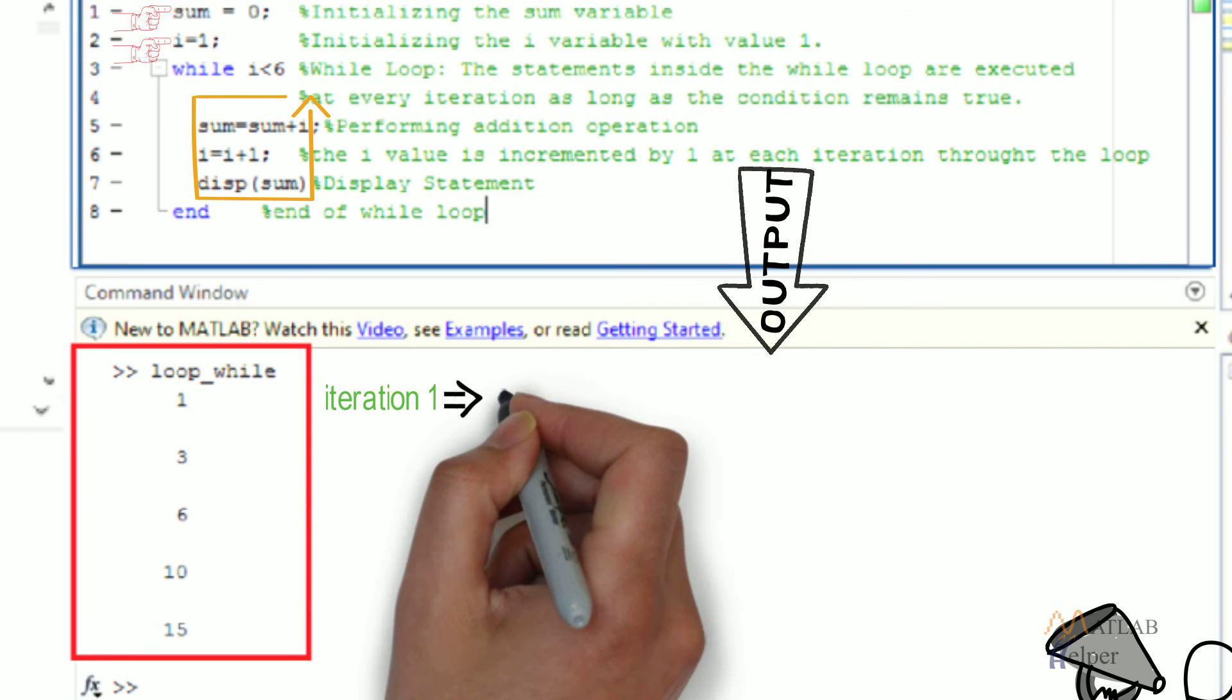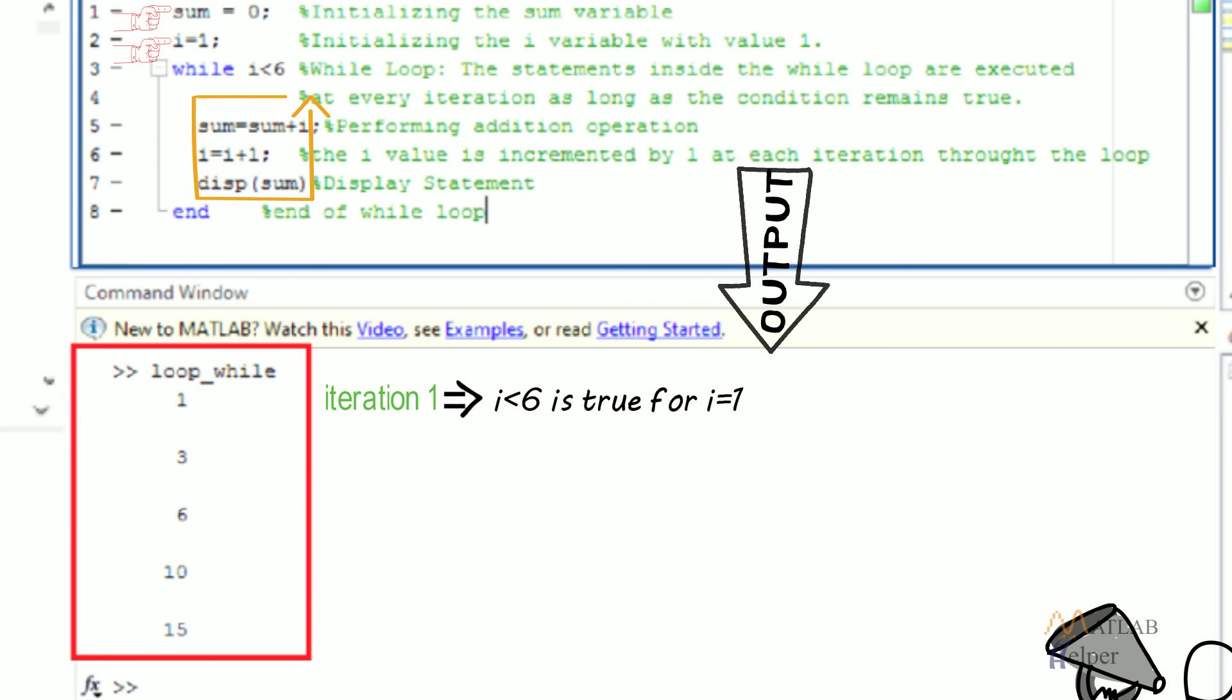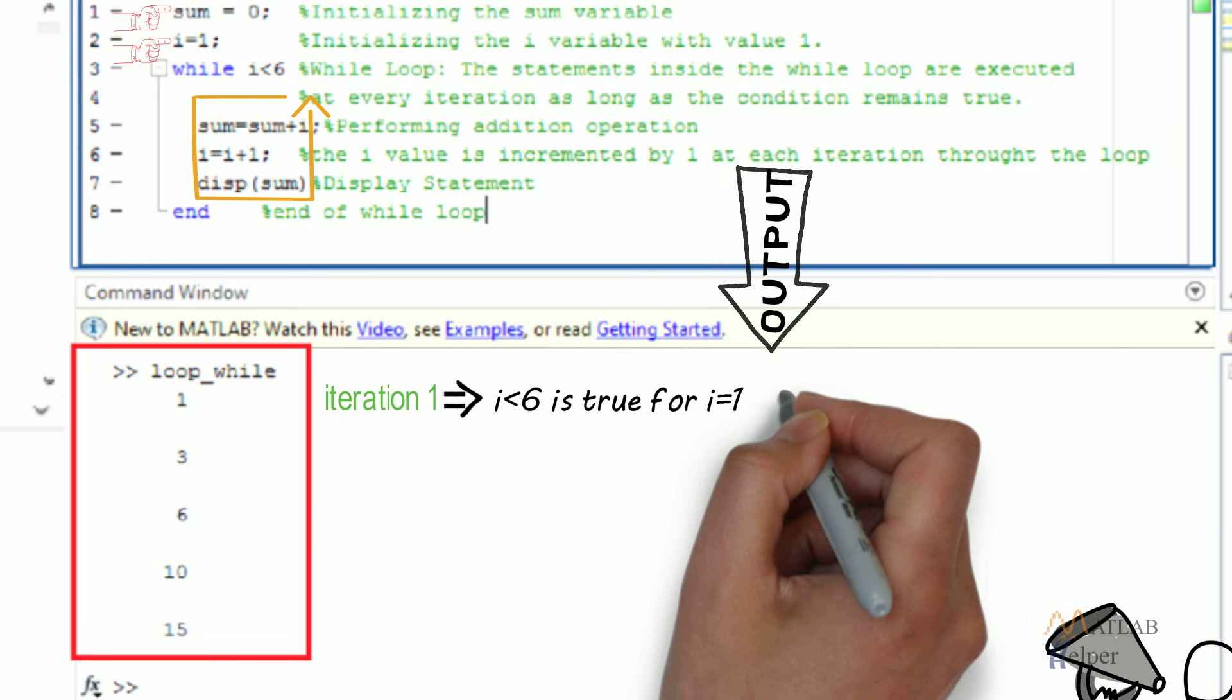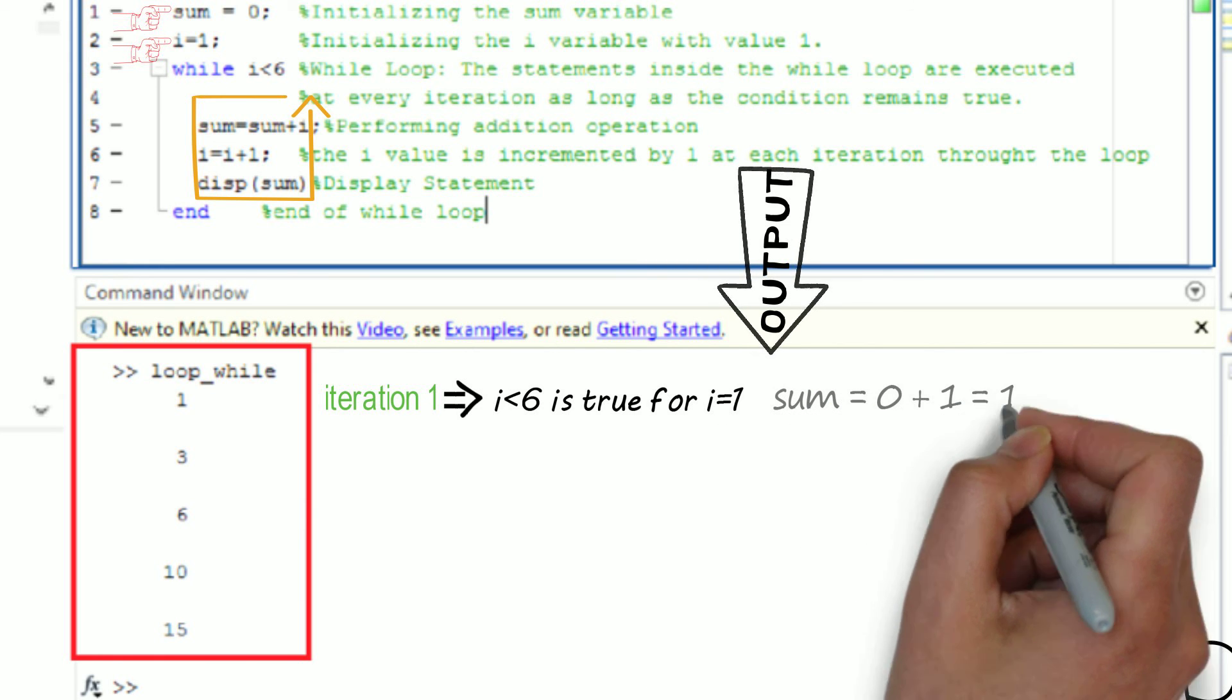At first, since i=1, the expression i<6 is true. Hence the statements inside the while loop would be executed, that is sum=0+1=1.